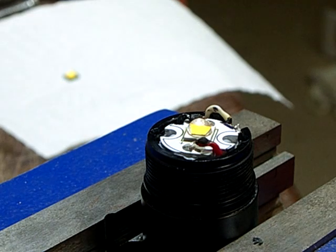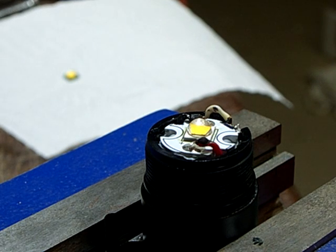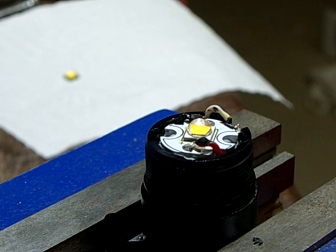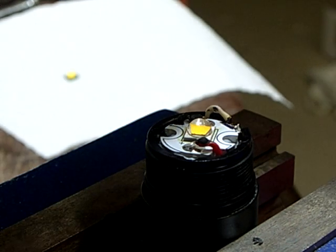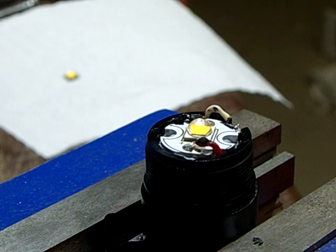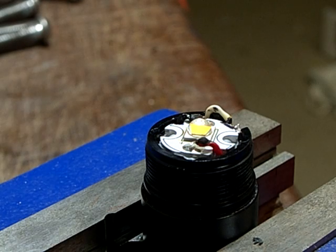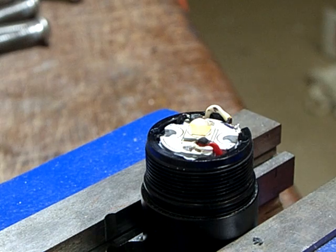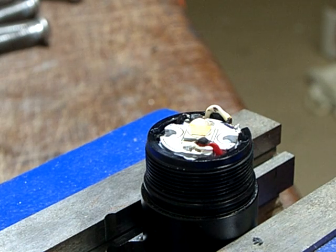The convenient thing with SMD soldering is that the surface tension of the molten solder draws the parts right into the middle of the solder pad, so there shouldn't be much aligning left to do once the solder has molten. So I will now take my crusty heat gun again and apply some heat to it to melt the solder.